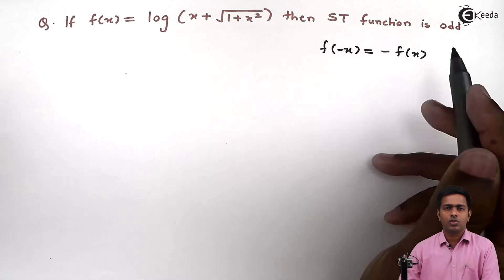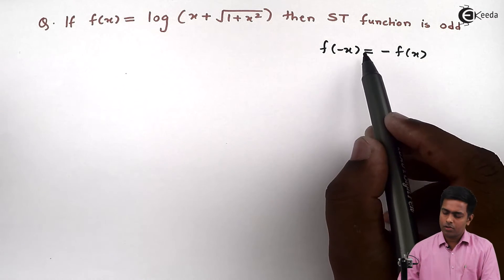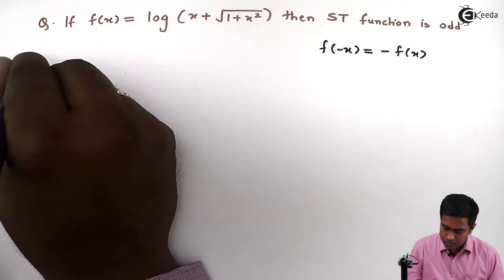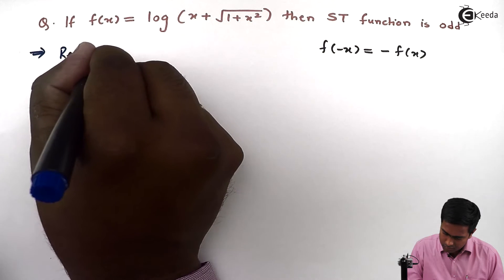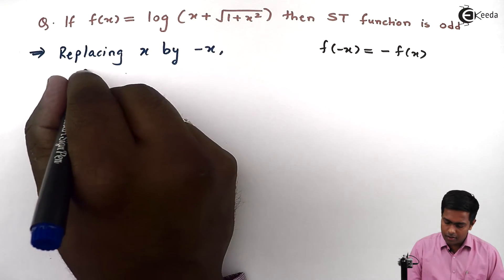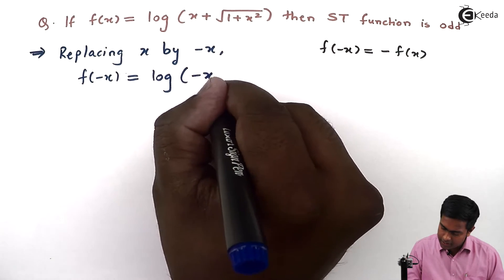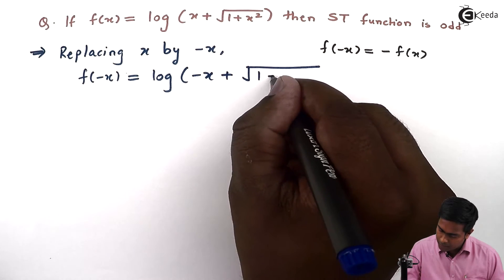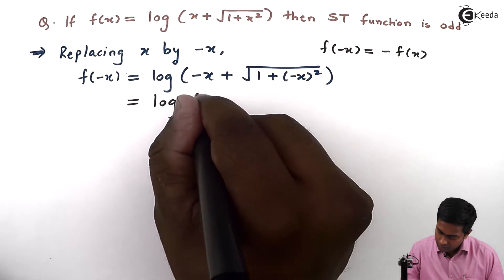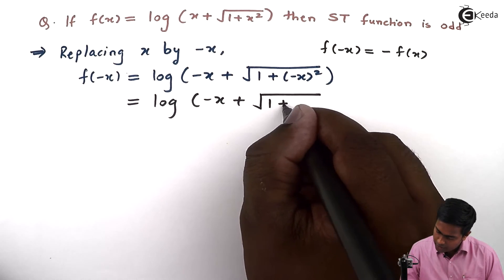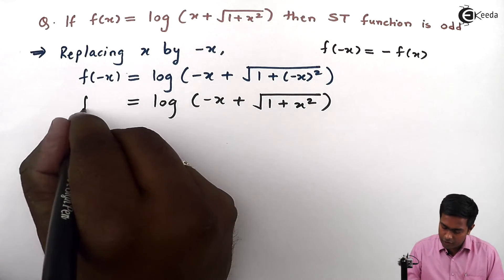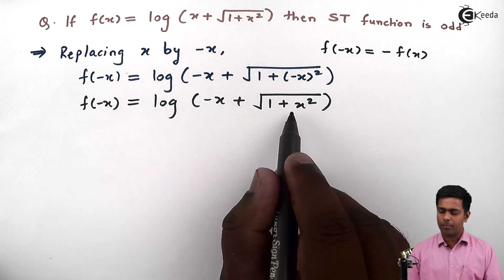On the left hand side we have f of minus x. To find the value of f of minus x, I will replace x by minus x in f of x. So replacing x by minus x, we get f of minus x equal to log of minus x plus root of 1 plus minus x the whole square. Solving this, since the square of minus x is x square, we get f of minus x equal to log of minus x plus root of 1 plus x square.